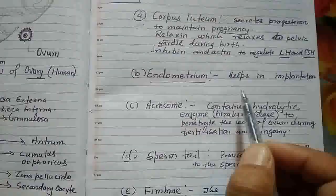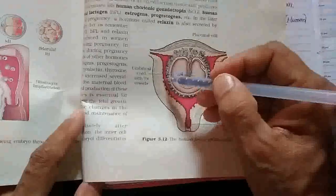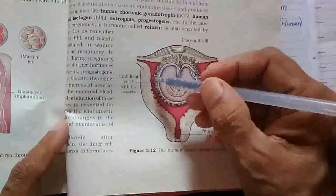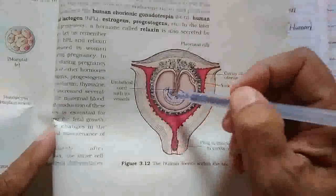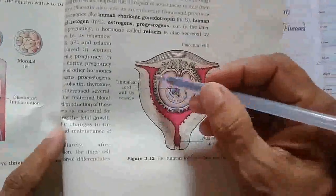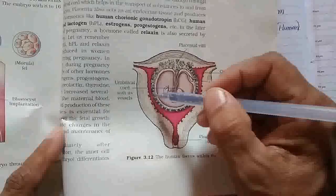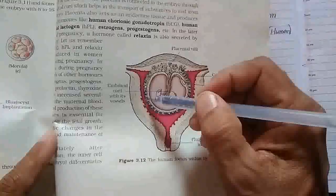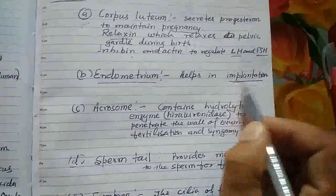Second, endometrium: the endometrium is the wall of the uterus — the inner wall towards the uterus cavity — and it is the wall through which implantation takes place, so it helps in implantation.